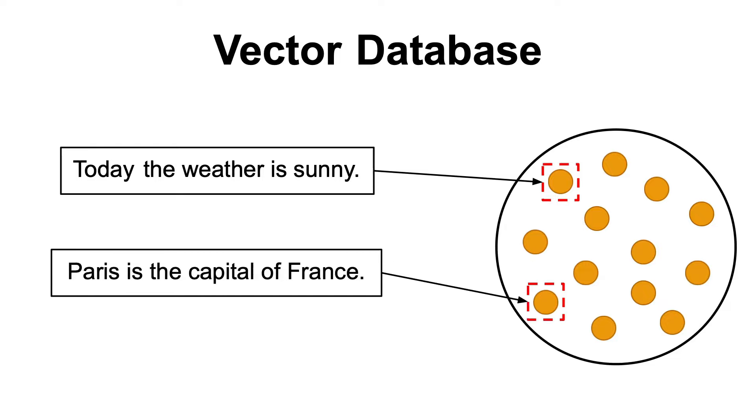On the other hand, those two sentences, today the weather is sunny, and Paris is the capital of France, have nothing in common. So the corresponding vectors should reside further away, compared to the previous example.